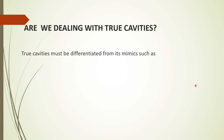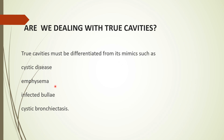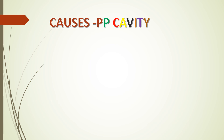How do we know it's a true cavity versus a false cavity? It must be differentiated from mimics such as cyst, emphysema, bullae, or cystic bronchiectasis. The differentiating features are explained in my video on bullae lung diseases — I'll be sharing the link below. So what are the causes of cavitary lung diseases?